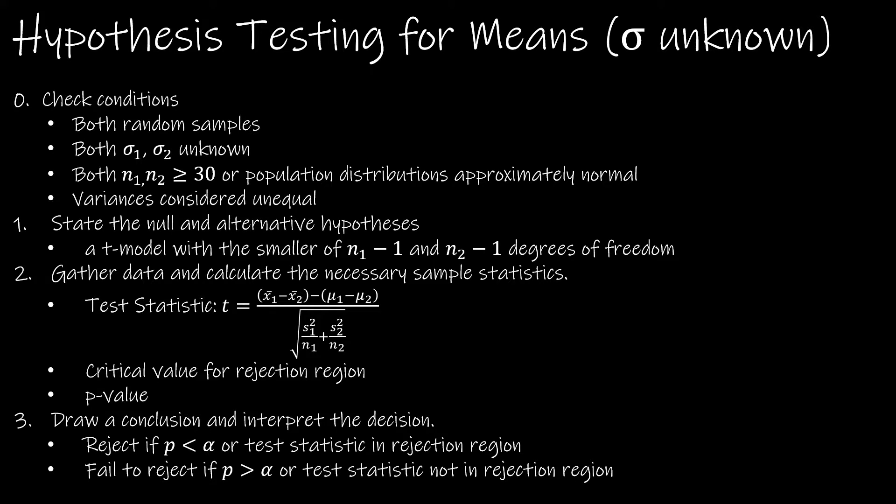The conditions are the same as hypothesis testing for means with sigma unknown, whether you have one sample or two. Of two samples, we have to check the conditions for each sample: random, sigma is unknown, and either the sample size is greater than or equal to 30 or the population distribution is approximately normal.